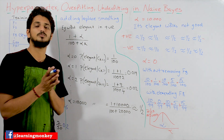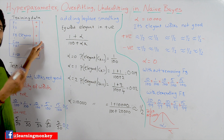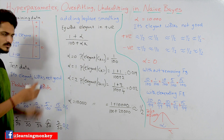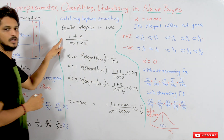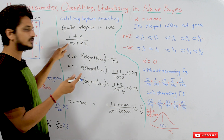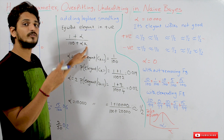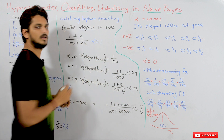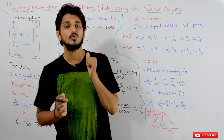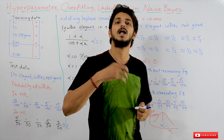We already discussed Laplace smoothing. Why do we use it? Suppose a word is not found in any of the positive classes — its probability would be 0. To avoid that situation, we use Laplace smoothing. The formula is: (count + alpha) / (total + alpha * k), where k is the number of classes. Alpha is chosen as 1. In our last class we stopped here and discussed why alpha equals 1. Which alpha value should we choose? That's what we'll understand in this class.